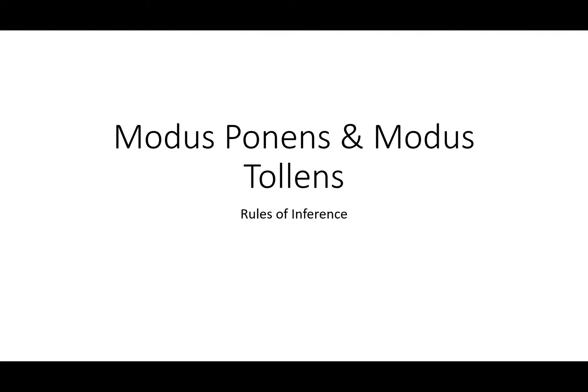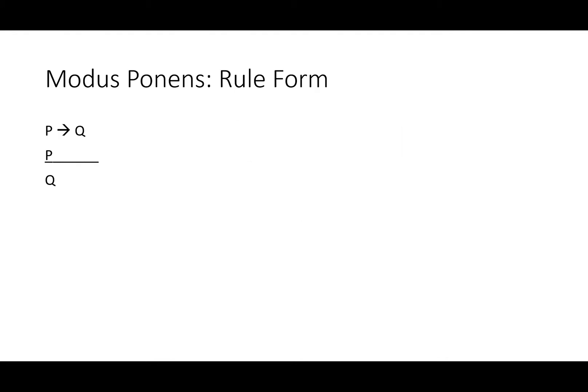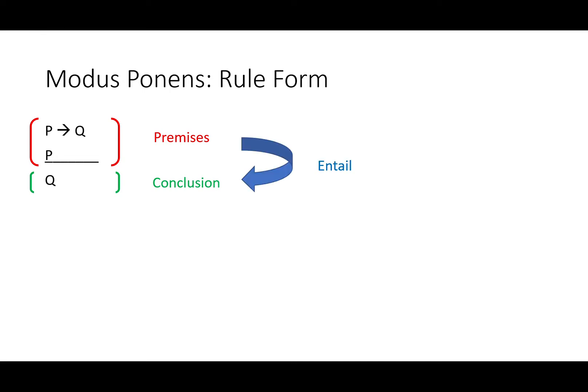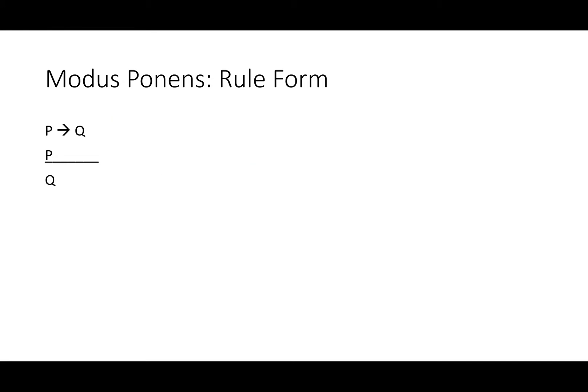Modus ponens and modus tollens are rules of inference. Modus ponens: if P then Q, P, therefore Q. Above the line are premises and below the line is the conclusion, just like an argument — those premises entail the conclusion. We can put in simple sentence letters to follow P and Q.